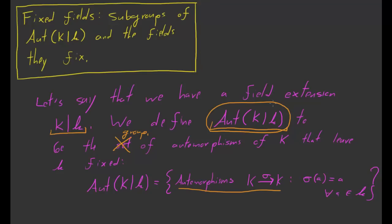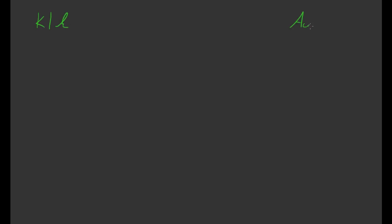So that's how we define the group of automorphisms of big K over little k. Given any field extension big K over little k, we can associate to it the group Aut(K/k) — the set of all automorphisms of big K which leave little k fixed.